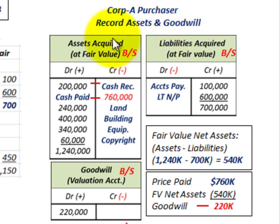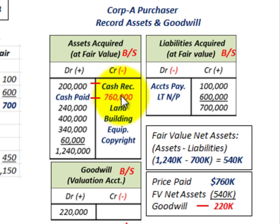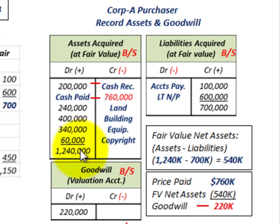For Corporation A recording the purchase — assets and goodwill acquired from Corp B are recorded at fair value. They acquired $200,000 in cash and debited cash for $200,000, but also paid out $760,000 in cash to purchase Corp B, which is credited. Land, building, equipment, and copyright were recorded at their fair values. The total assets acquired, not including goodwill, was $1,240,000. For liabilities, accounts payable of $100,000 and notes payable of $600,000 are credited at their fair values, totaling $700,000.